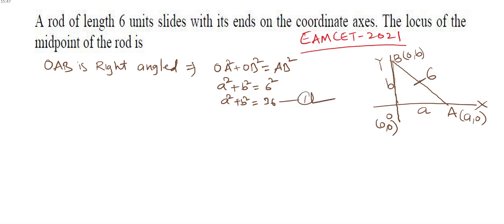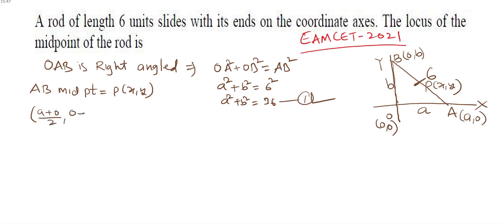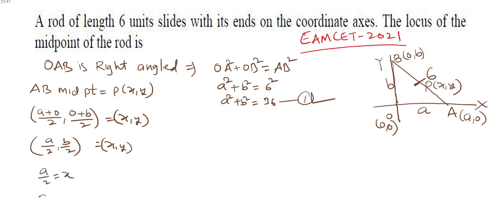Now we find the locus of the midpoint of the rod. This midpoint is taken as P(x, y). The midpoint of AB is ((a+0)/2, (0+b)/2) = (x, y), giving us a/2 = x and b/2 = y, so a = 2x and b = 2y.